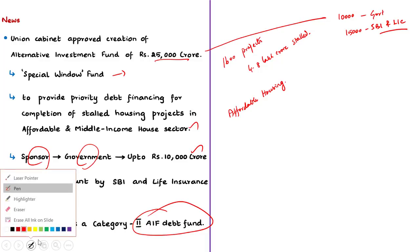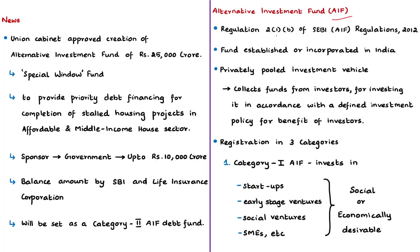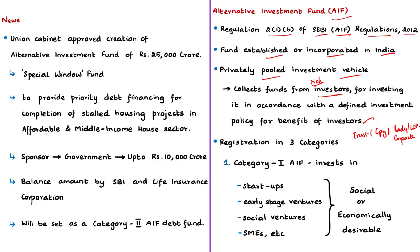Let us see what alternative investment funds are. In India, AIFs are defined in Regulation 2(1)(b) of the SEBI Alternative Investment Funds Regulations of 2012. According to this regulation, an alternative investment fund means any fund established or incorporated in India — it is a privately pooled investment vehicle which collects funds from sophisticated investors, whether from Indian or foreign sources, and invests it in accordance with a defined investment policy for the benefit of its investors. The vehicle can be in the form of a trust, a company, a body corporate, or a limited liability partnership. Hence, AIFs are private funds which otherwise do not come under the jurisdiction of any regulatory agency in India. As per the 2012 regulations, AIFs shall seek registration in one of three categories.